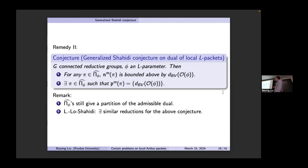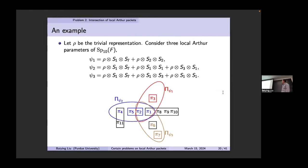This summarizes recent progress on the wave-front side of L-packets, Arthur packets, and arbitrary L-packets. Now let's turn to the second side of the problem — the intersection of local Arthur packets. One example shows the complication: you have three sets of local Arthur parameters and the corresponding Arthur packets. For example, ψ₂'s Arthur packet consists of four representations coming from three L-packets, so patching up this ψ₂ packet is quite complicated.